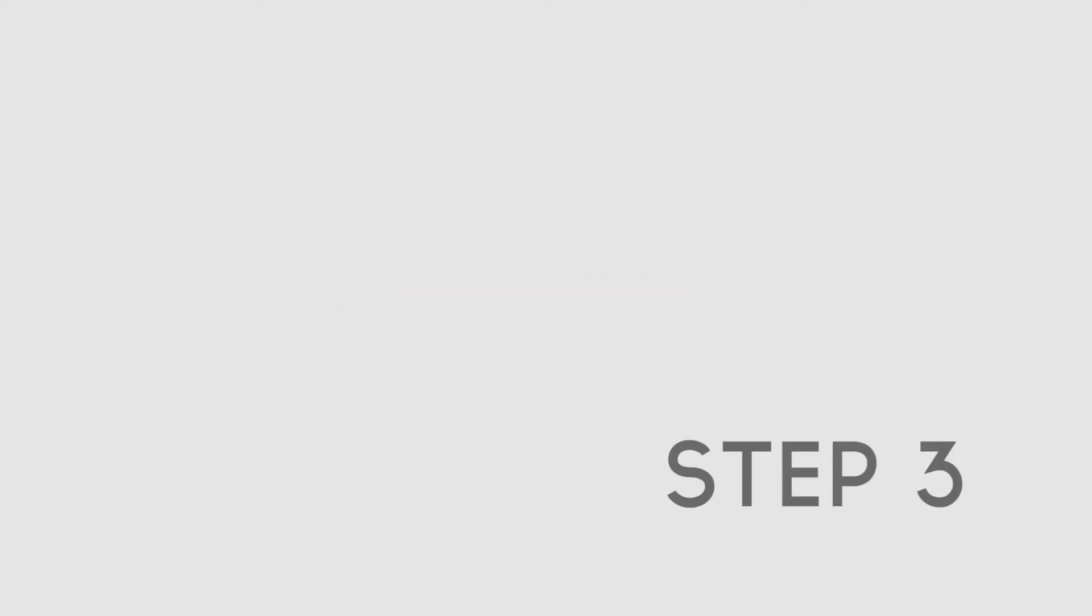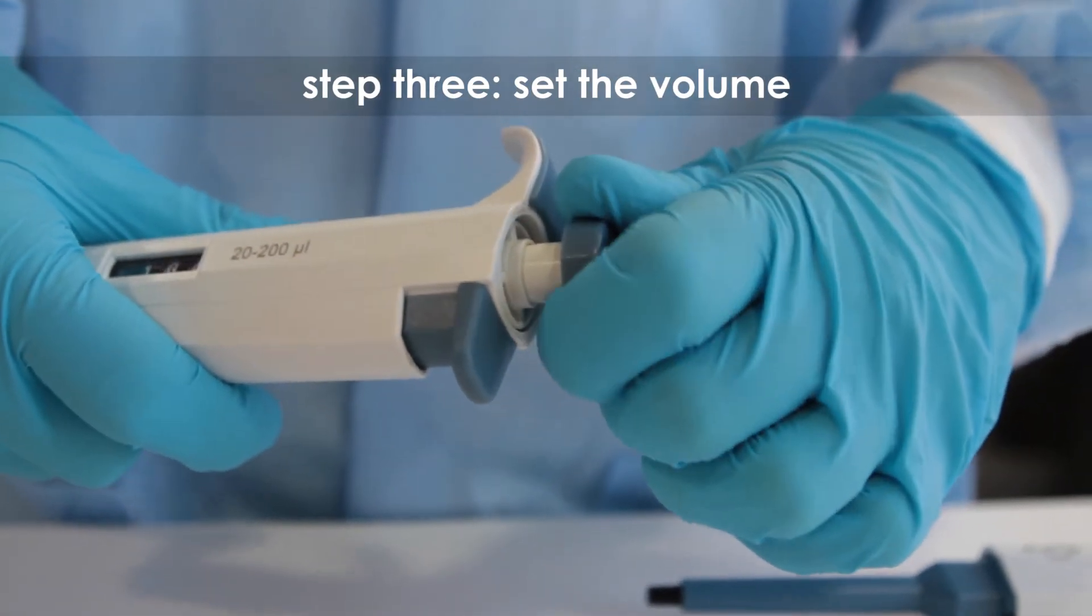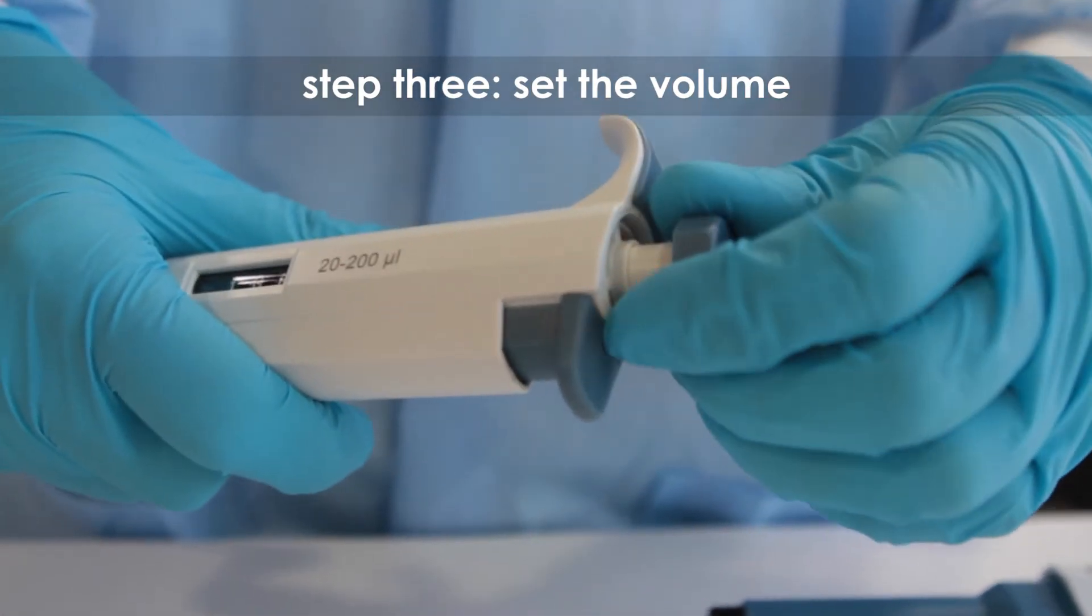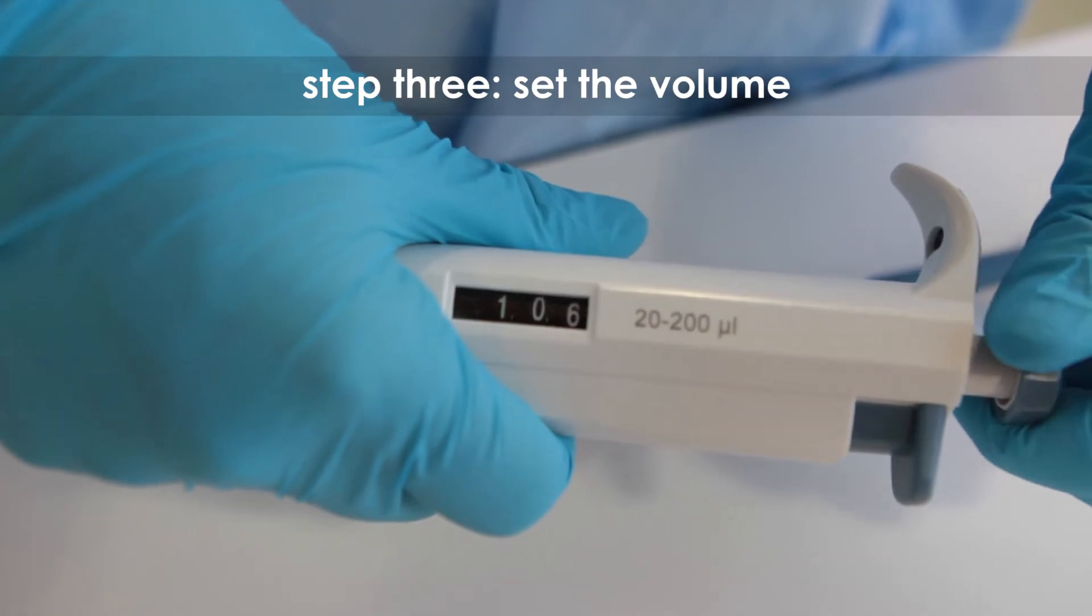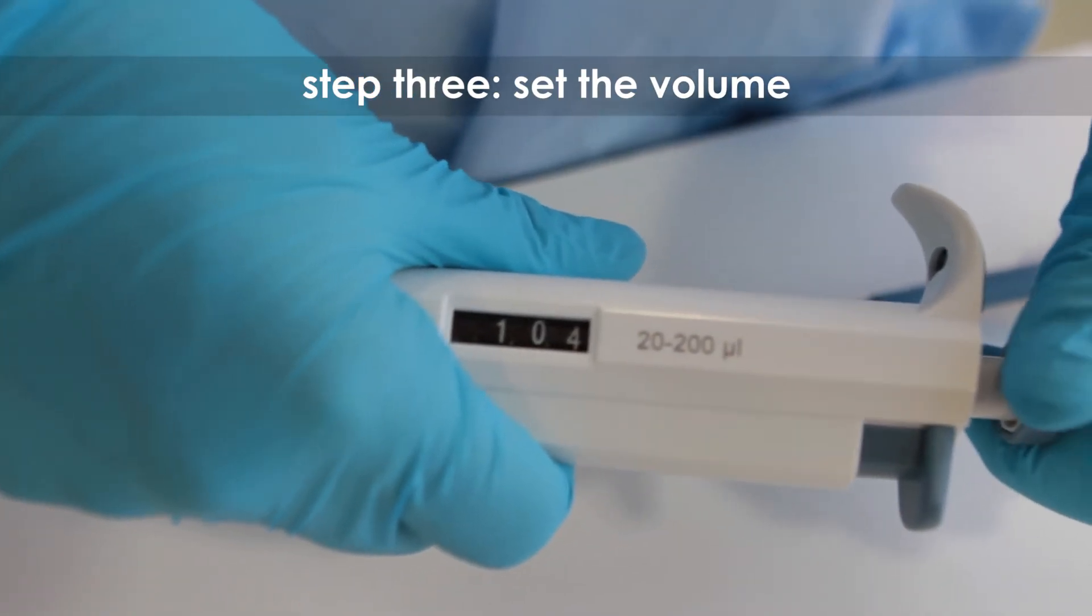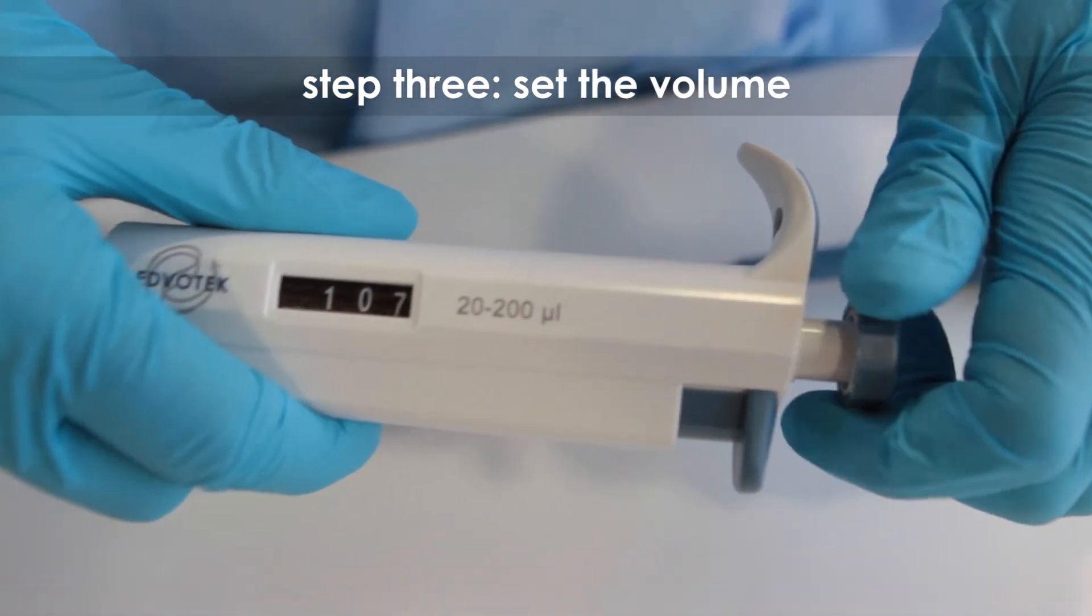Step 3. Set the volume by twisting the top of the plunger. In general, twisting the plunger clockwise reduces the volume, and twisting the plunger counterclockwise increases the volume.